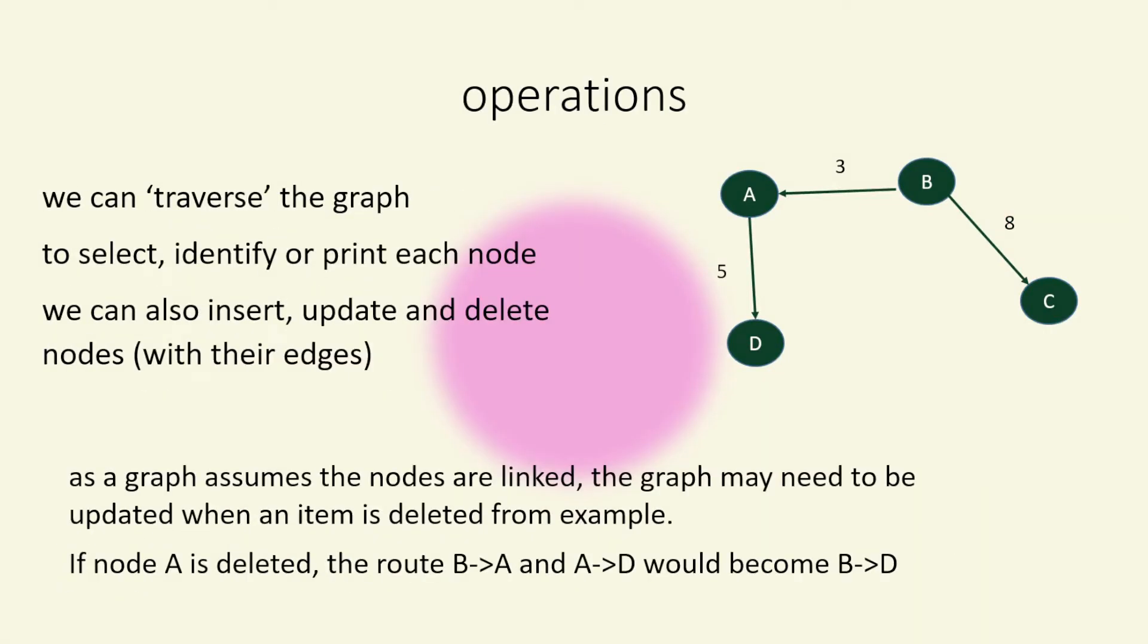So with a graph, if we need to go through each element or through the graph, we can say we traverse the graph. We can select, identify, or even print each node. Other operations include insert, update and delete. We tend to update and insert and delete nodes and then we have to update the edges so the graph needs to continue to be a graph.